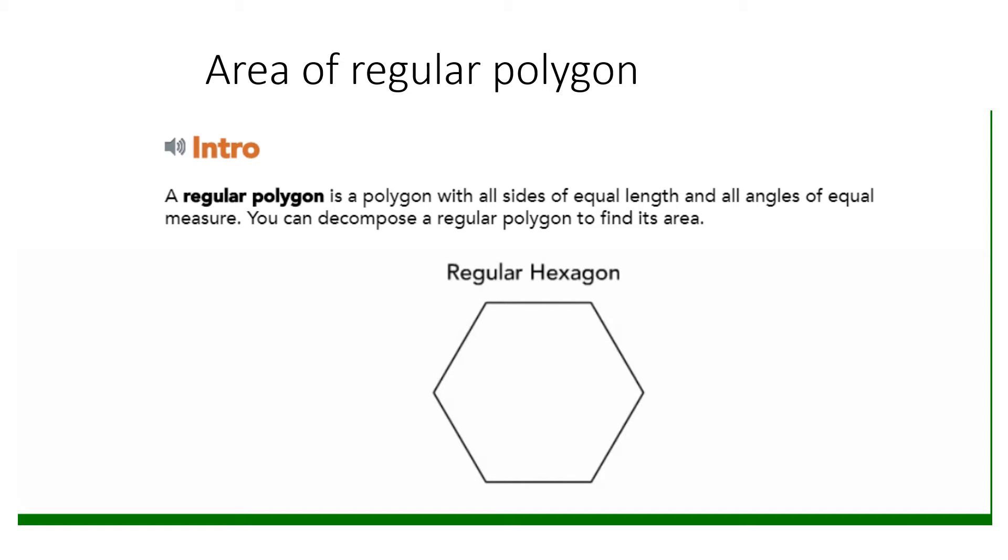Suppose you have a regular hexagon. The six sides of the regular hexagon have the same length. You can decompose a regular hexagon into six equilateral triangles to find its area.